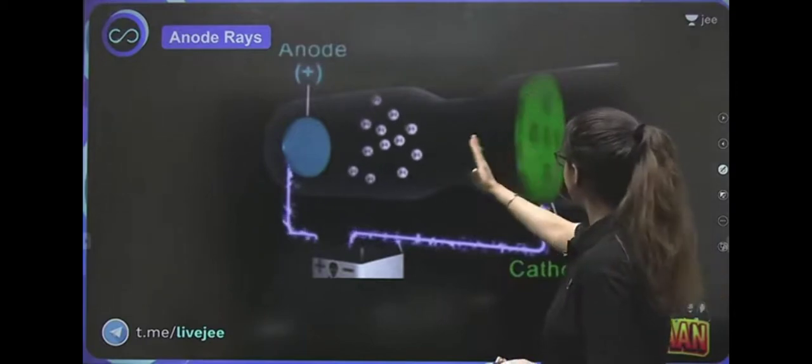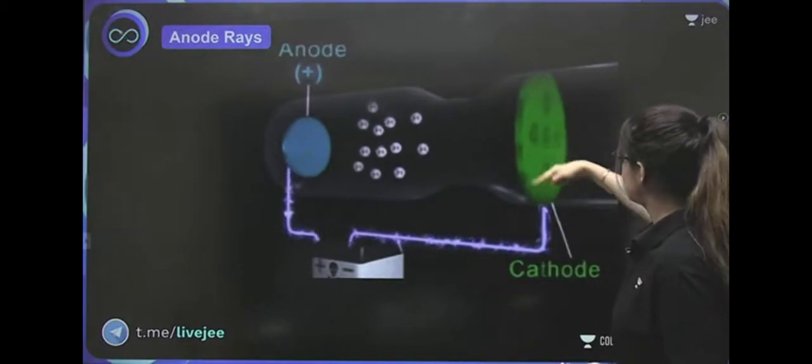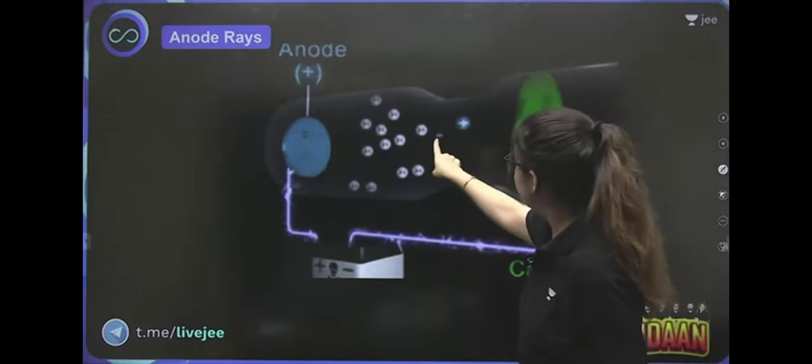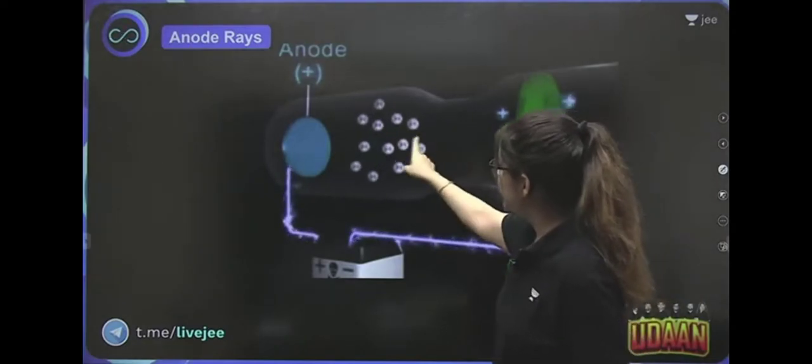The electrons start from the cathode. What will the electrons do? They will drop the energy and they will go to the positive anode.